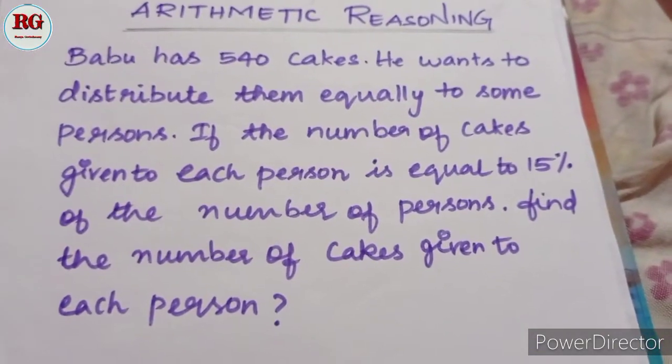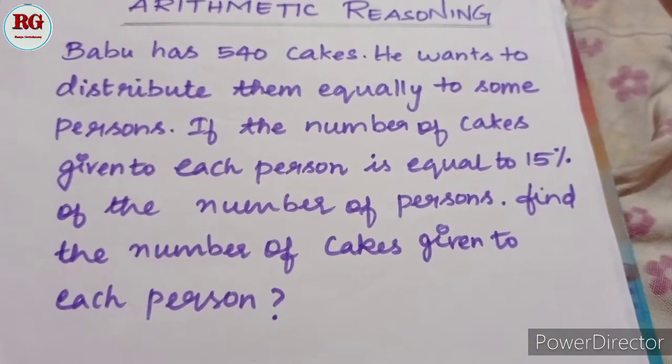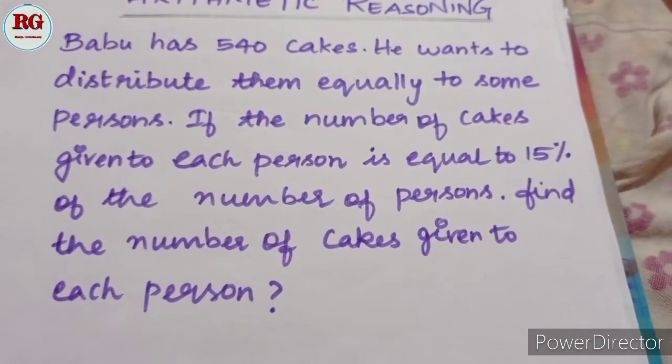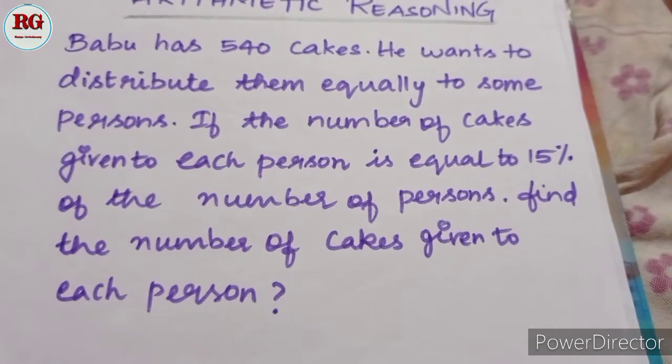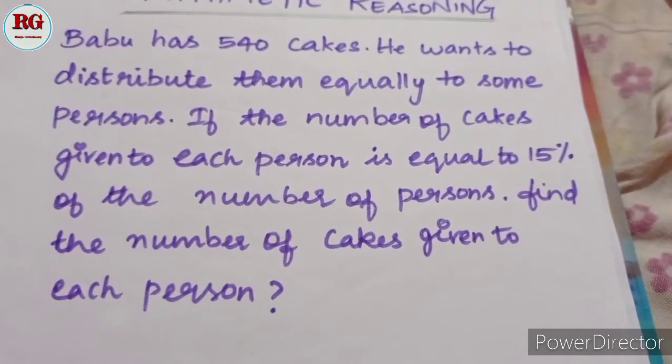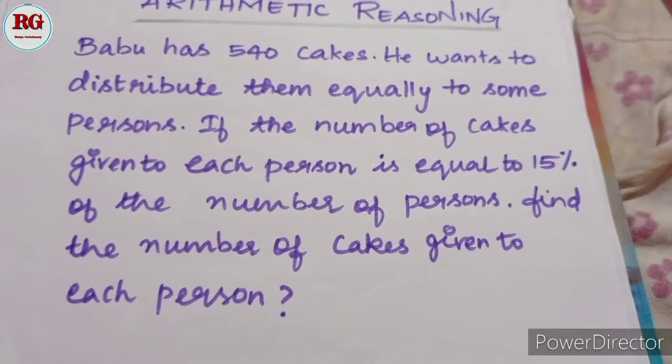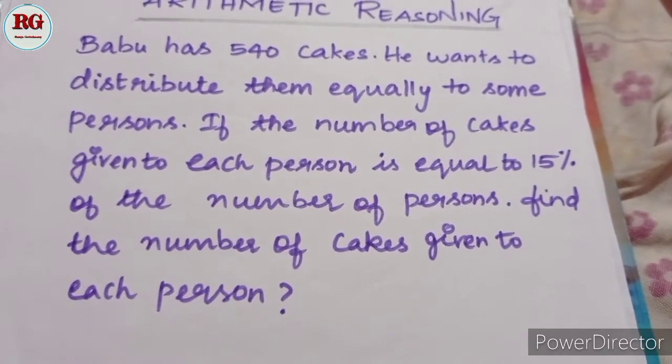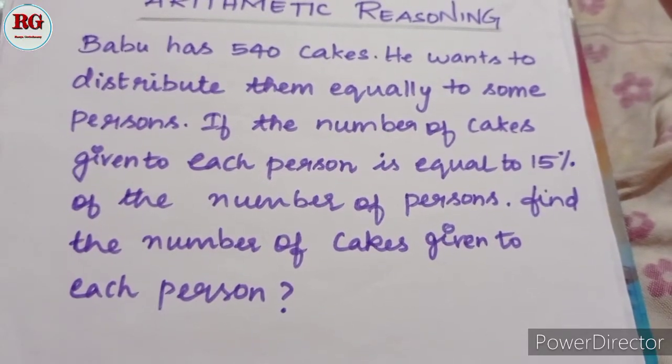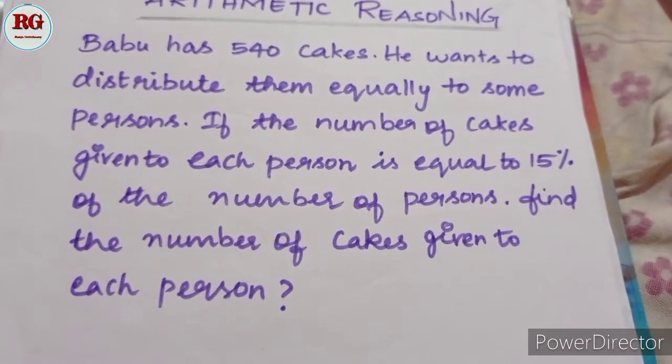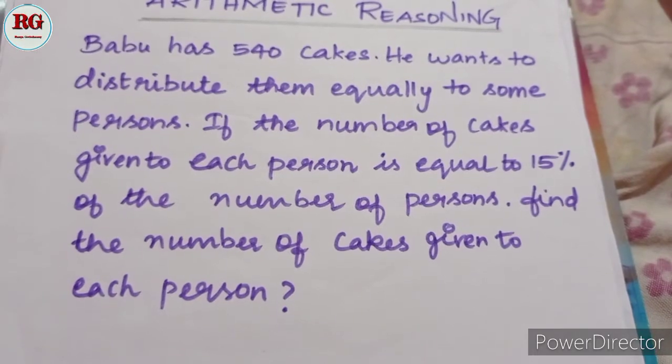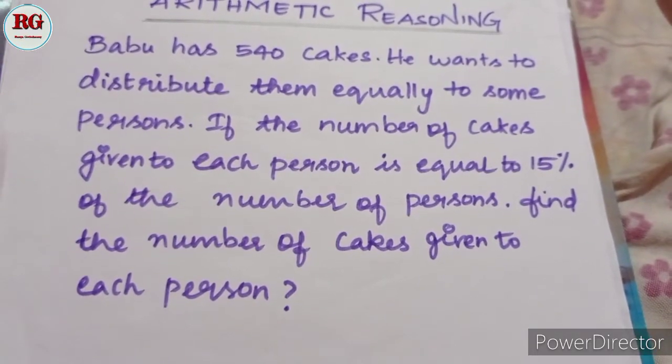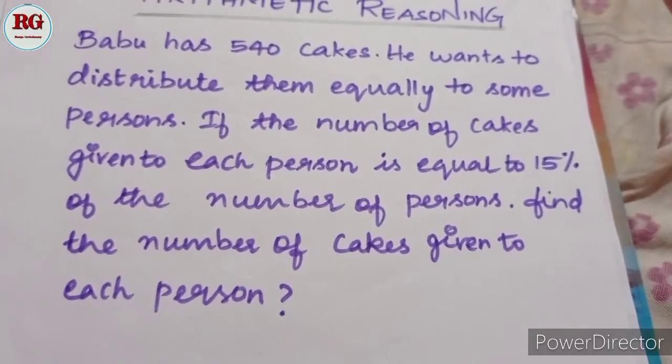Babu has 540 cakes. He wants to distribute them equally to some persons. If the number of cakes given to each person is equal to 15% of the number of persons, find the number of cakes given to each person.